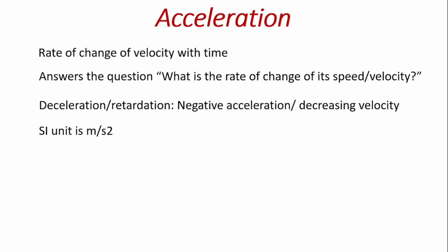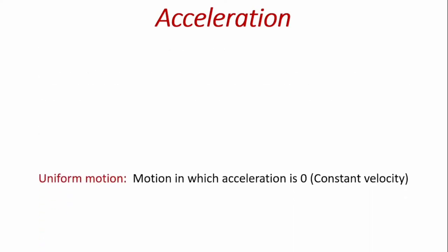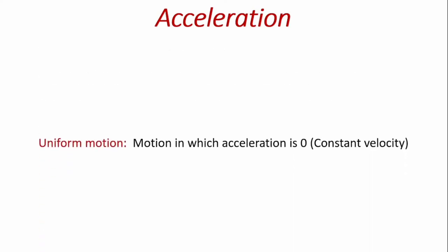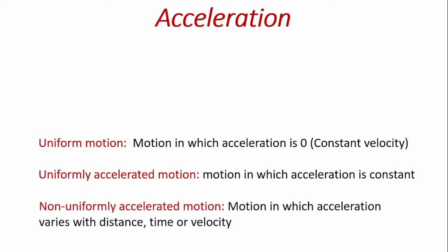The type of acceleration a body is undergoing is used to describe the motion of the body. For instance, we have what you call uniform motion, a kind of motion in which the acceleration is zero. We have what you call uniformly accelerated motion, a kind of motion in which the acceleration is constant. And there's the non-uniformly accelerated motion, a motion in which acceleration varies with distance, velocity, or time.